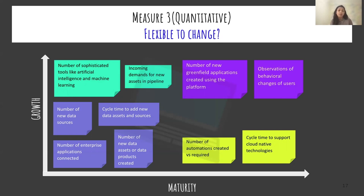Once you move up in growth, you focus on more sophisticated technologies like artificial intelligence and machine learning. In maturity, automations become an important measure — requests for automations versus how many you've achieved, and how quickly you can move to cloud-native technologies. A final indicator is the number of greenfield applications — new applications created from scratch using the latest technologies on your platform — indicating how well innovation is supported.